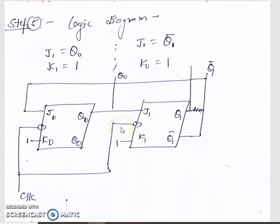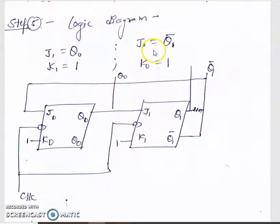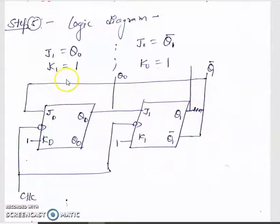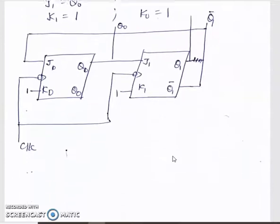We have 2 flip-flops and a synchronous counter, so the clock is given synchronously. From the K-map, we find: J0 = Q̄1, K0 = 1, and J1 = Q̄1. K0 is 1 and this is 1. This completes the design of the synchronous mod 3 counter.